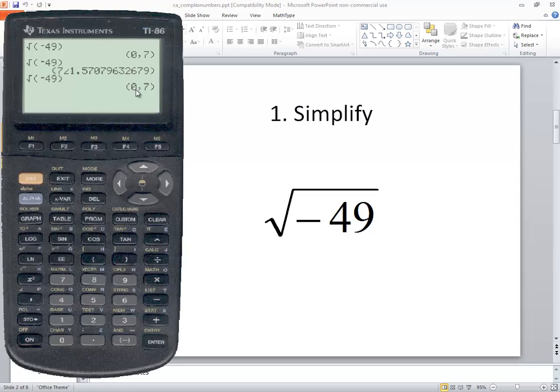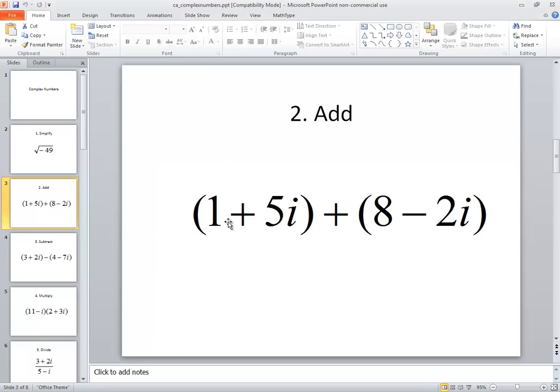The zero is our real part, comma, and then the seven is our imaginary part. So how you interpret this, this is 7i.